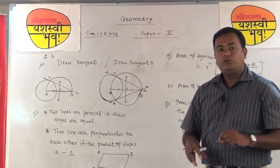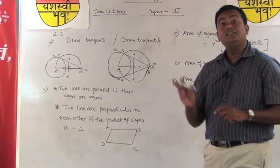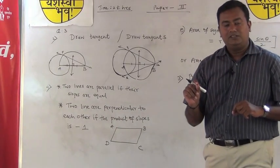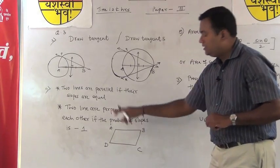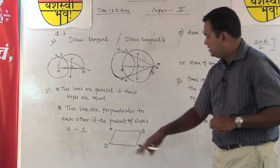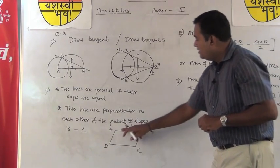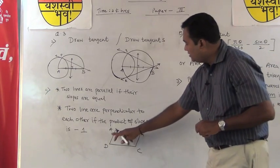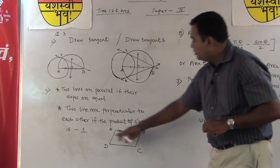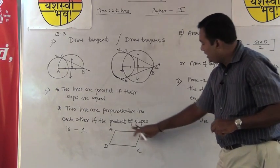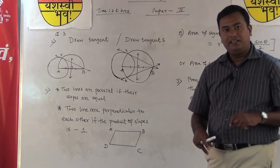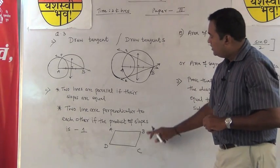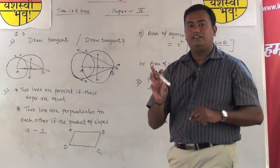Question number 4: four vertices are given and using slope we have to prove the quadrilateral is a parallelogram. We could use the distance formula, but the question specifies using slope. We know that if two lines are parallel, their slopes are equal. So find the slope of AB and CD — if equal, those sides are parallel. Similarly find slopes of the other pair of opposite sides. If both pairs of opposite sides are parallel, the quadrilateral is a parallelogram.